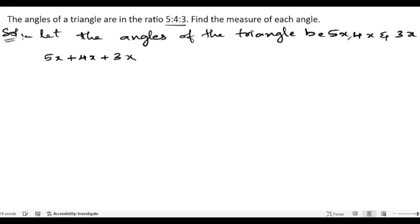We know that angle sum property: 5x plus 4x plus 3x which gives us 180 degrees. This is because of the angle sum property.